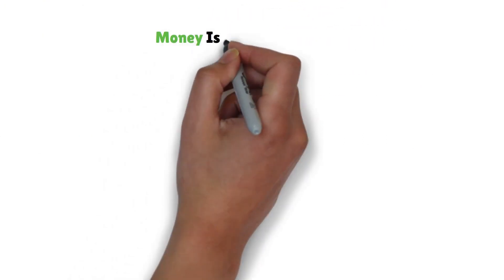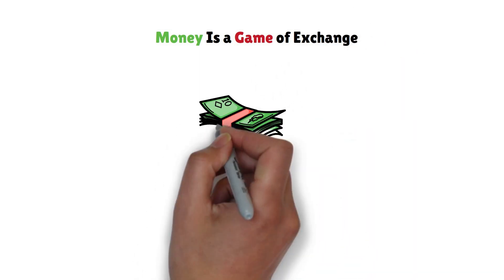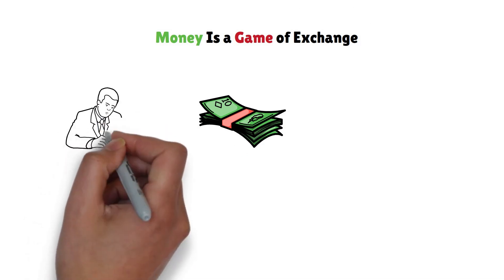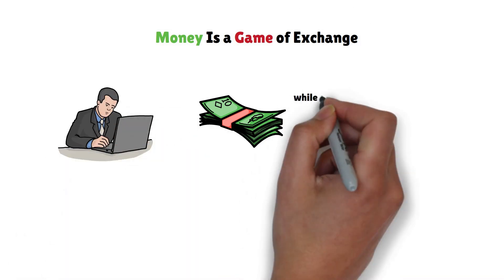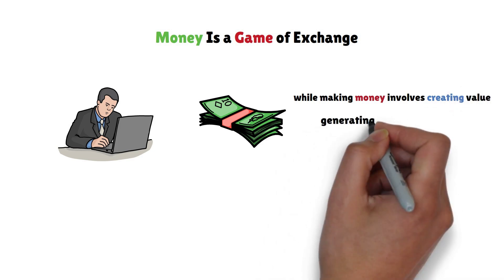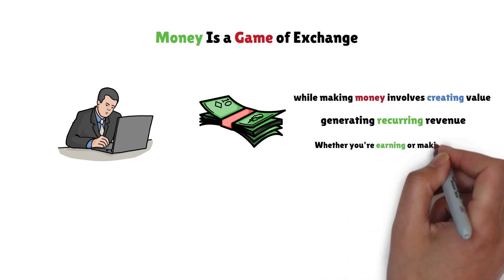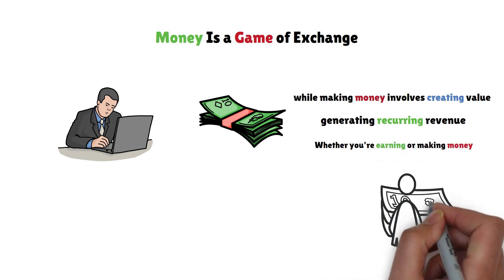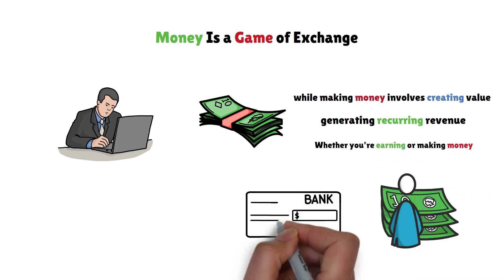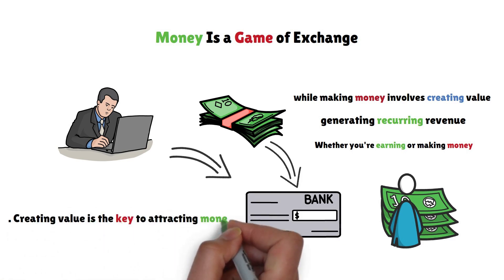Rule 9: Money is a game of exchange. Earning and making money are distinct concepts. Earning money involves exchanging time and energy for a paycheck, while making money involves creating value and generating recurring revenue. Whether you're earning or making money, you must provide value that motivates the exchange. Money doesn't appear out of thin air. It comes from a source like a buyer's pocket or a business's account. Creating value is the key to attracting money.